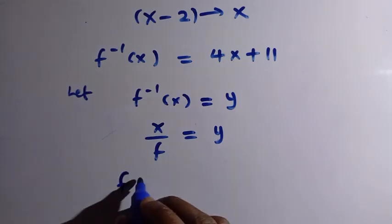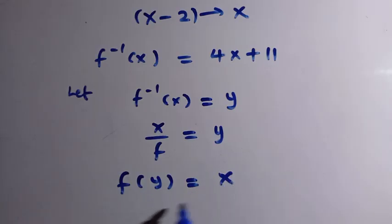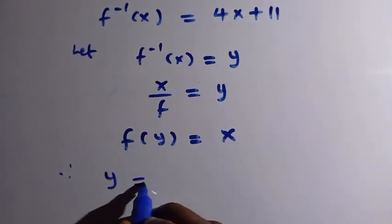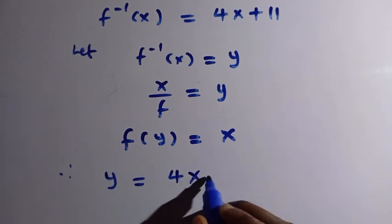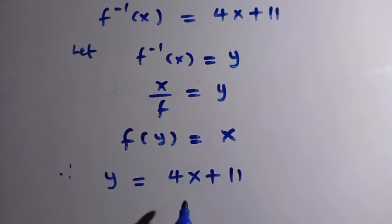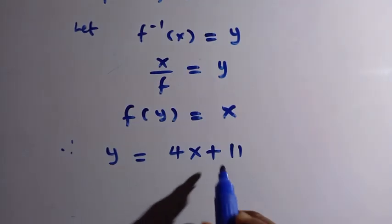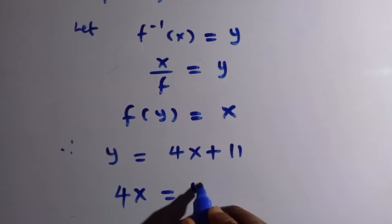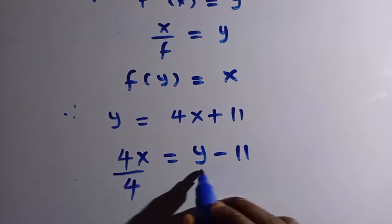So we have f of y equals x. Now, since we let f inverse of x equal y, and f inverse of x equals 4x plus 11, we have y equals 4x plus 11. We want to make x the subject of the formula, so we get 4x equals y minus 11.